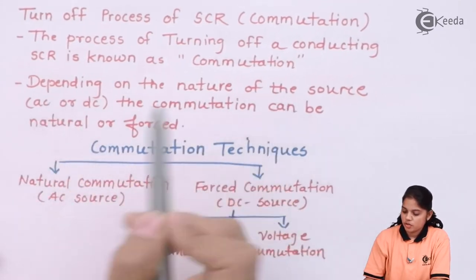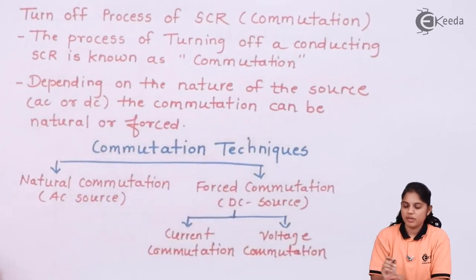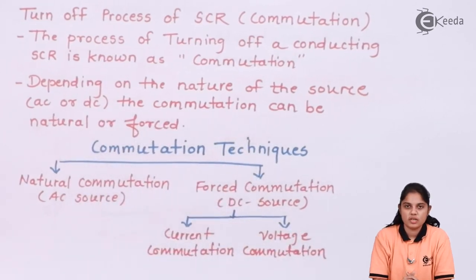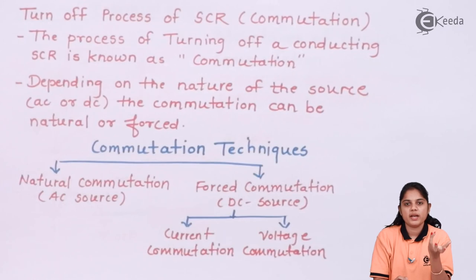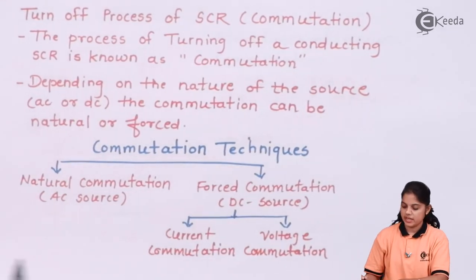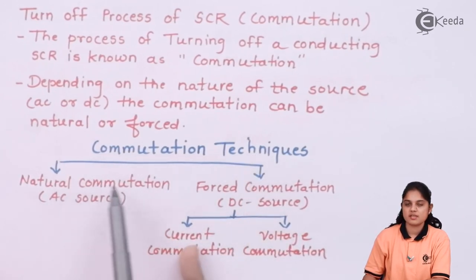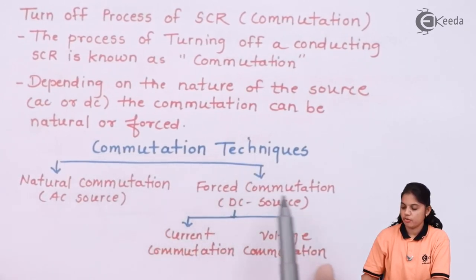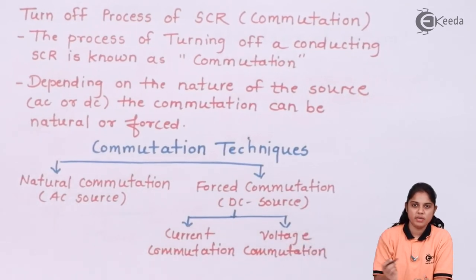Depending on the nature of the source — it can be AC or DC — the commutation can be natural or forced. First we are going to see how naturally an SCR can be turned off, and if not, what can be done to forcibly turn off a conducting SCR. The two commutation techniques are natural commutation and forced commutation. Your source can be either AC or DC.